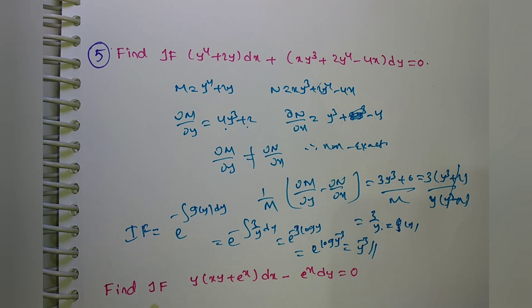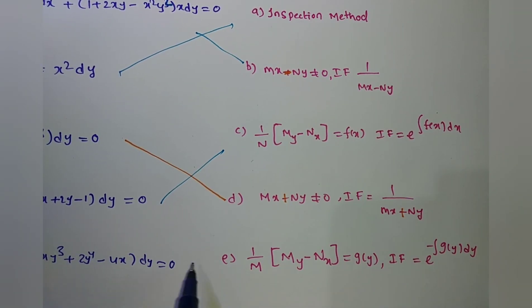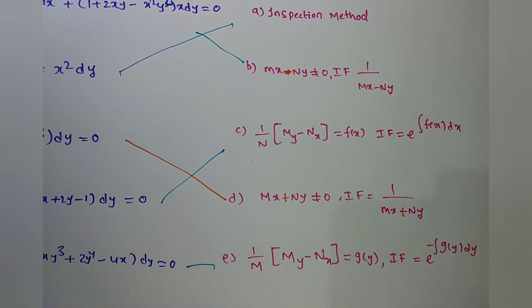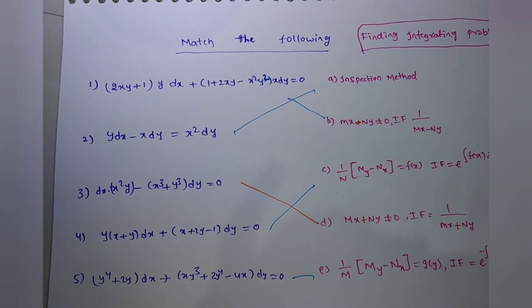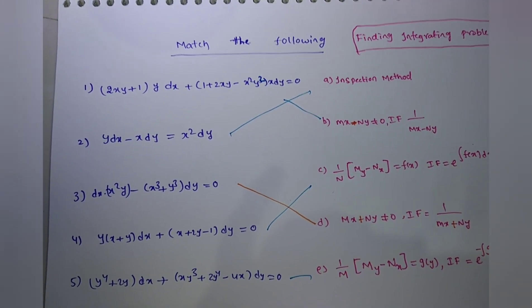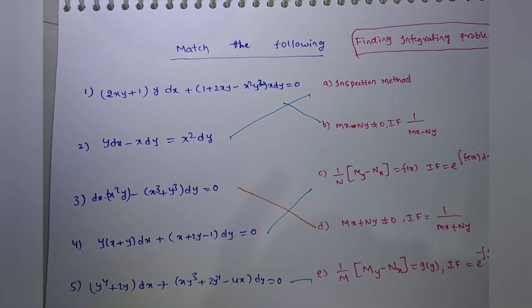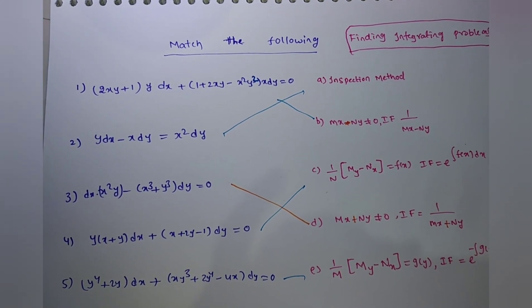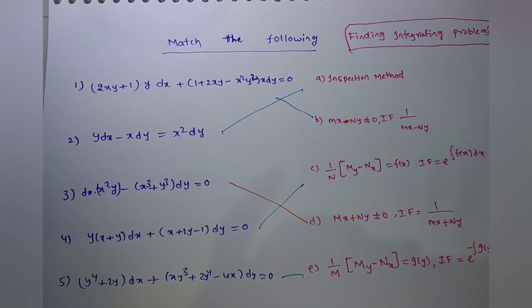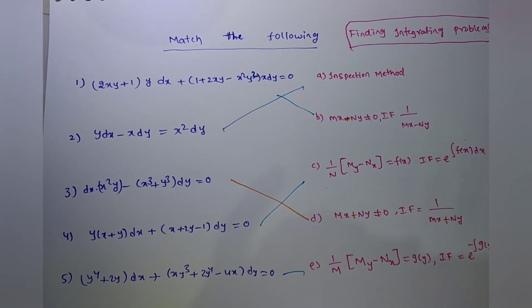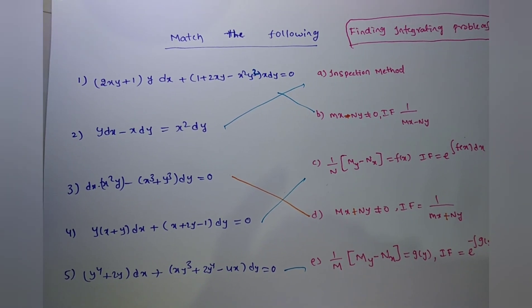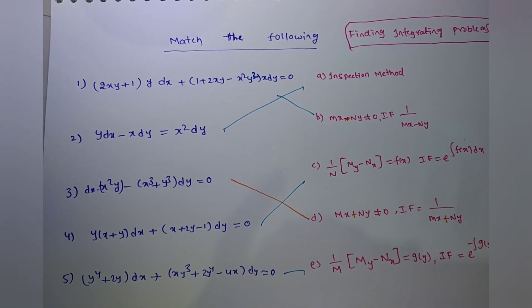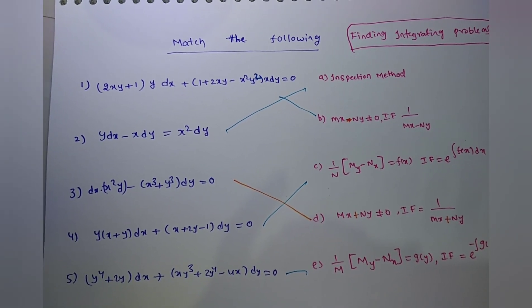So the fifth problem answer is option E. I think you understood very clearly. If they are given M dx + N dy — whether it is exact or non-exact — and if it is not exact, how to find the integrating factor using the previous methods. Please comment on this video. Thank you for watching.